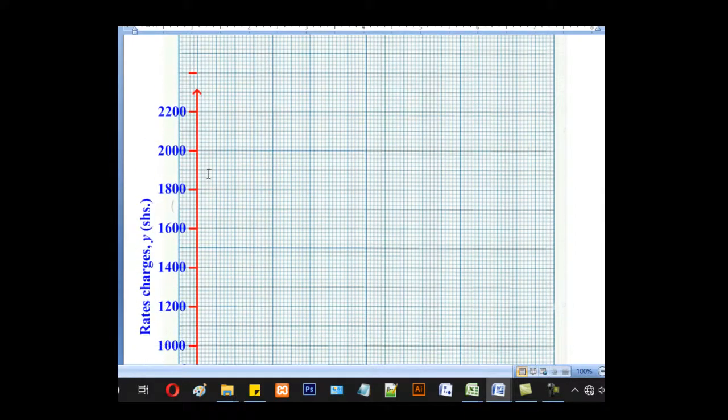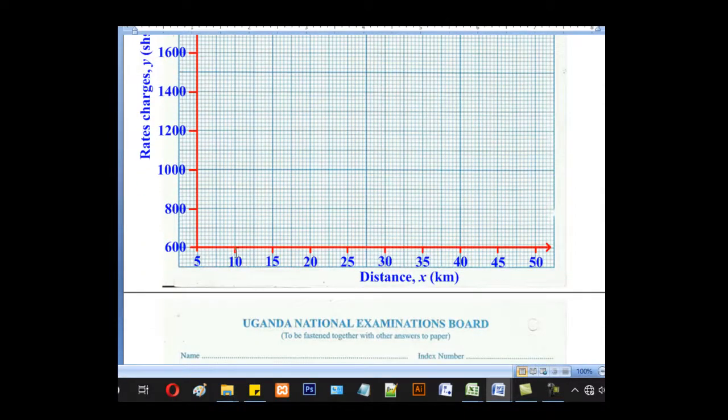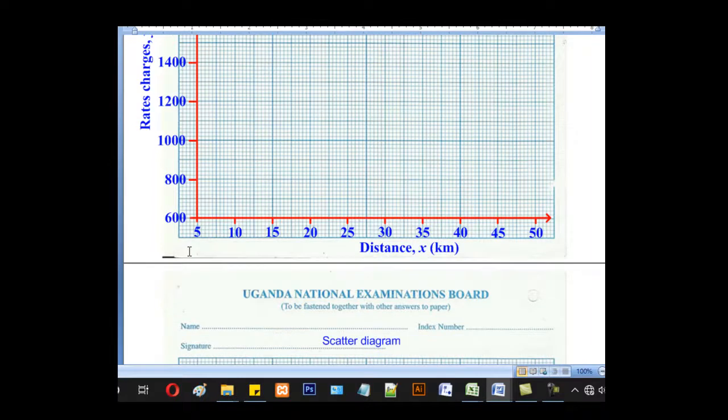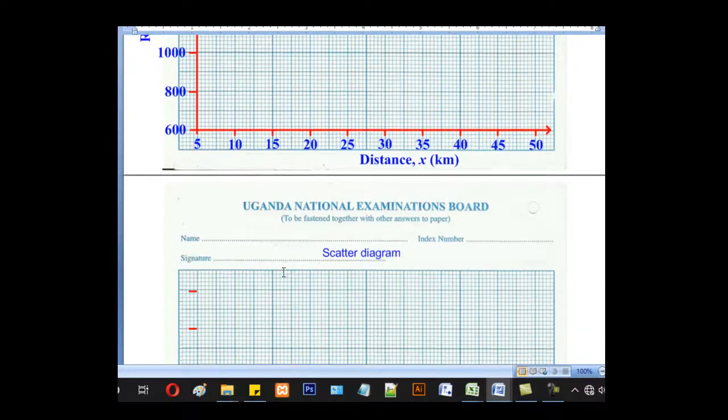After knowing that, we shall now demarcate our scale. Draw the horizontal line to mean the axis, for the axis, vertical axis. Demarcate the values, leaving intervals of 200 for the vertical axis, and intervals of 5 for the horizontal axis.